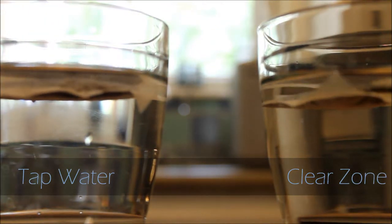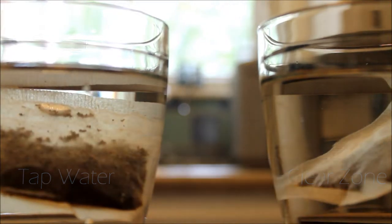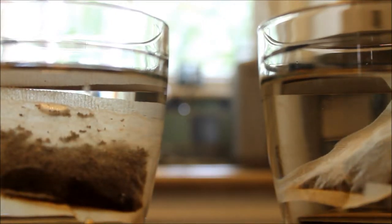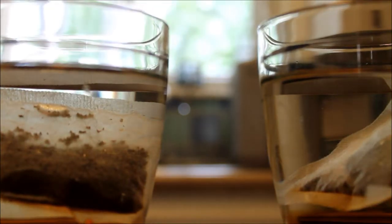We have tap water here on the left, and Clear Zone's alkalized water on the right. Now, to explain what's going on, both cups of water are at the same temperature, same volume, etc., but different content, and that's what's important. We'll see the tea bags sink and the water begin to turn golden amber.